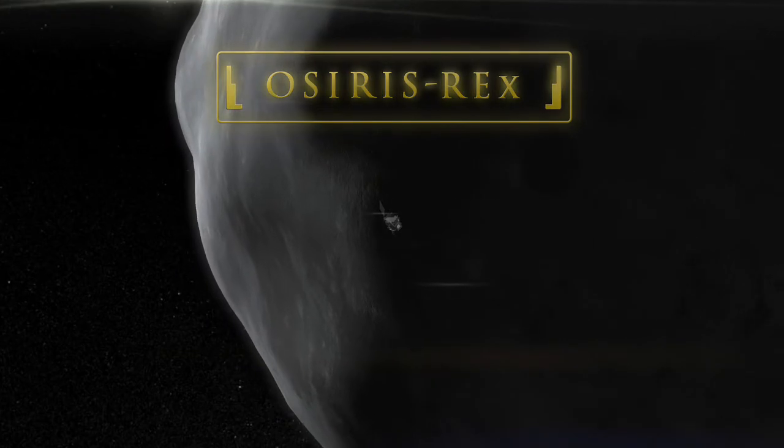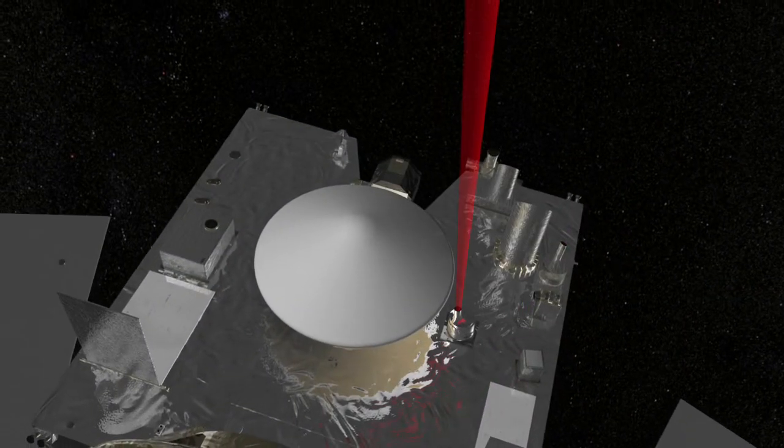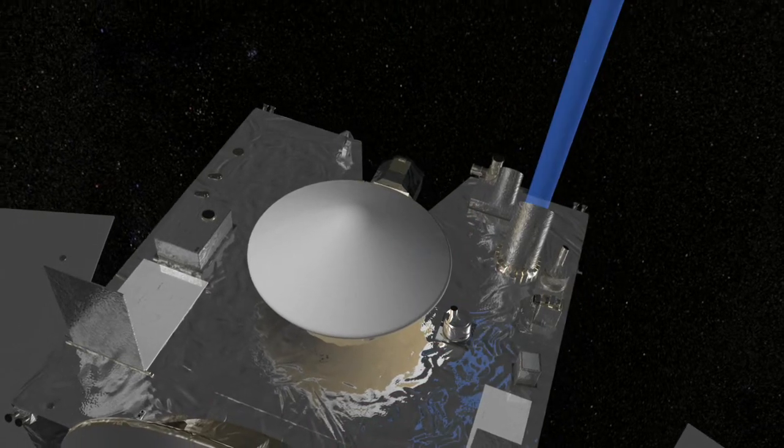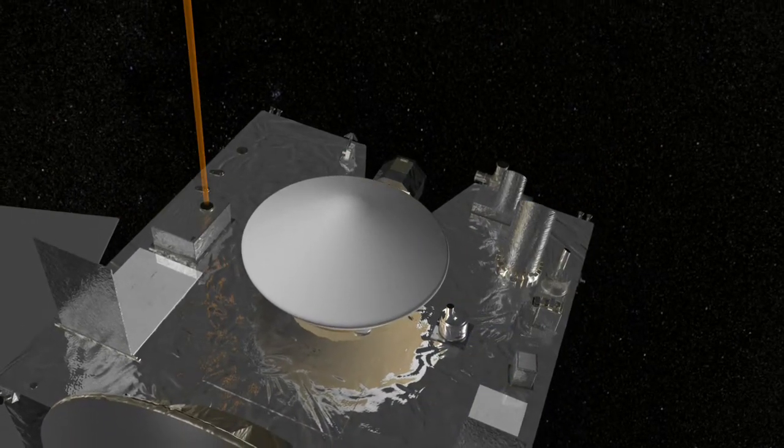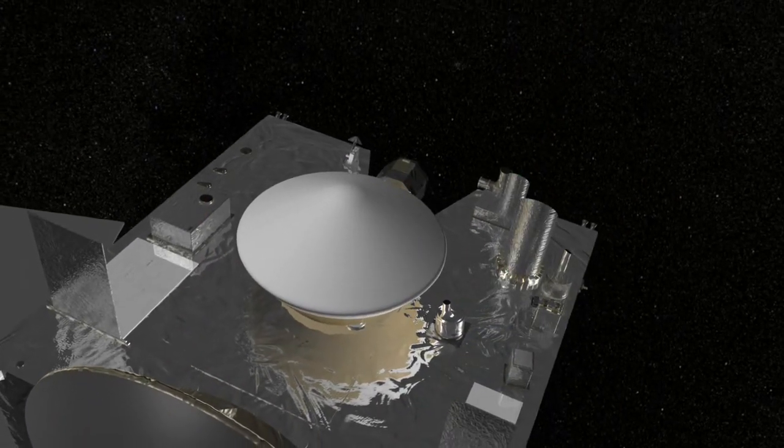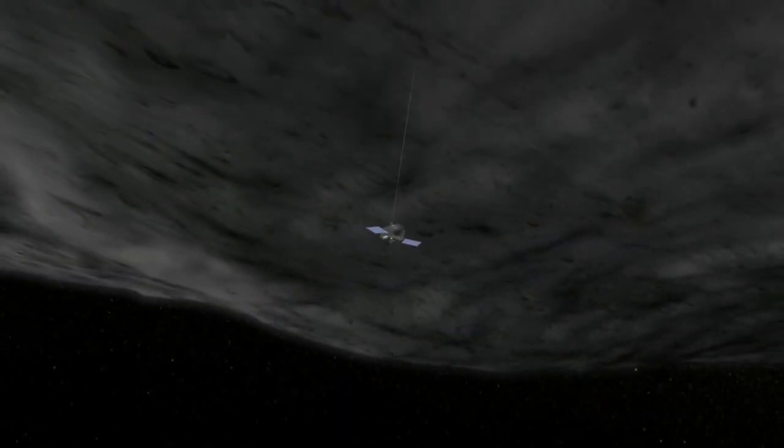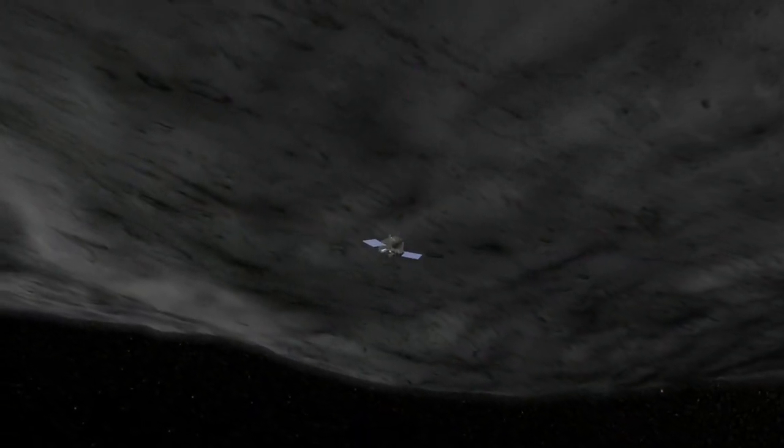OSIRIS-REx will study a near-Earth asteroid called Bennu. It will launch in 2016 and arrive at Bennu in 2018, where it will spend over a year surveying the asteroid in unprecedented detail, determining its chemical makeup, mineralogy, and geologic history.